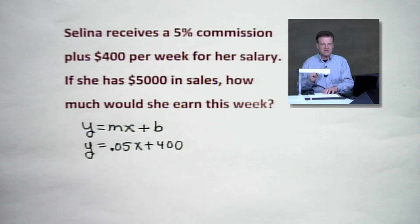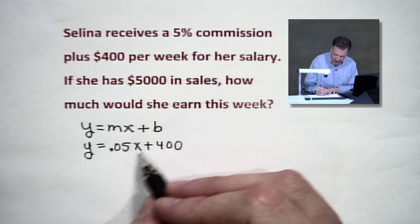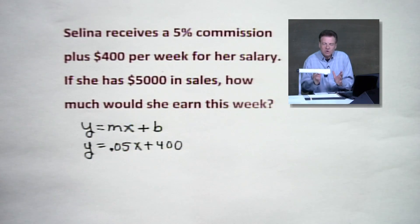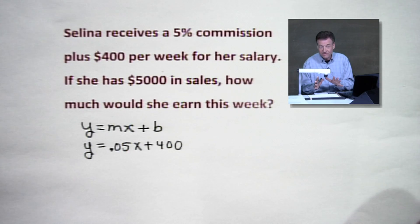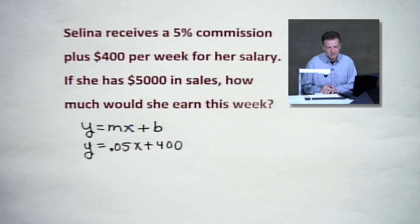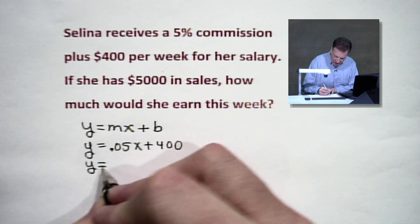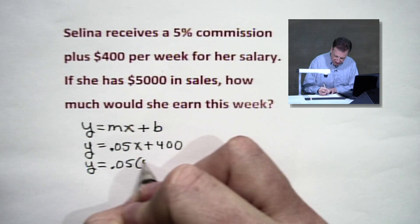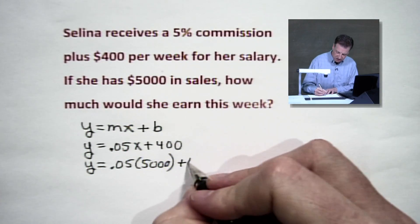Now, we've got $5,000 in sales — that's your X value. We're going to substitute 5,000 in for X and just run the formula. We're going to multiply first, then add the 400 — order of operations. So it's going to be five hundredths times 5,000, and then we're going to add 400.